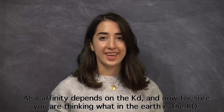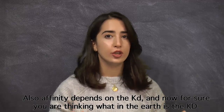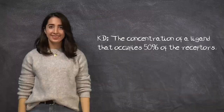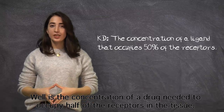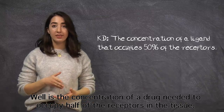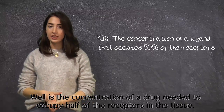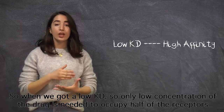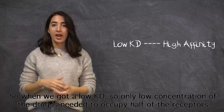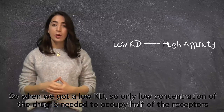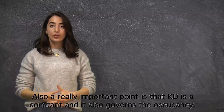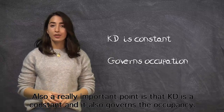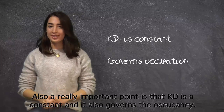Affinity depends on the KD. What is KD? It's the concentration of the drug needed to occupy half of the receptors in the tissue. When we have a low KD, only a low concentration of the drug is needed to occupy half of the receptors, meaning we have high affinity. KD is a constant and also governs the occupancy.